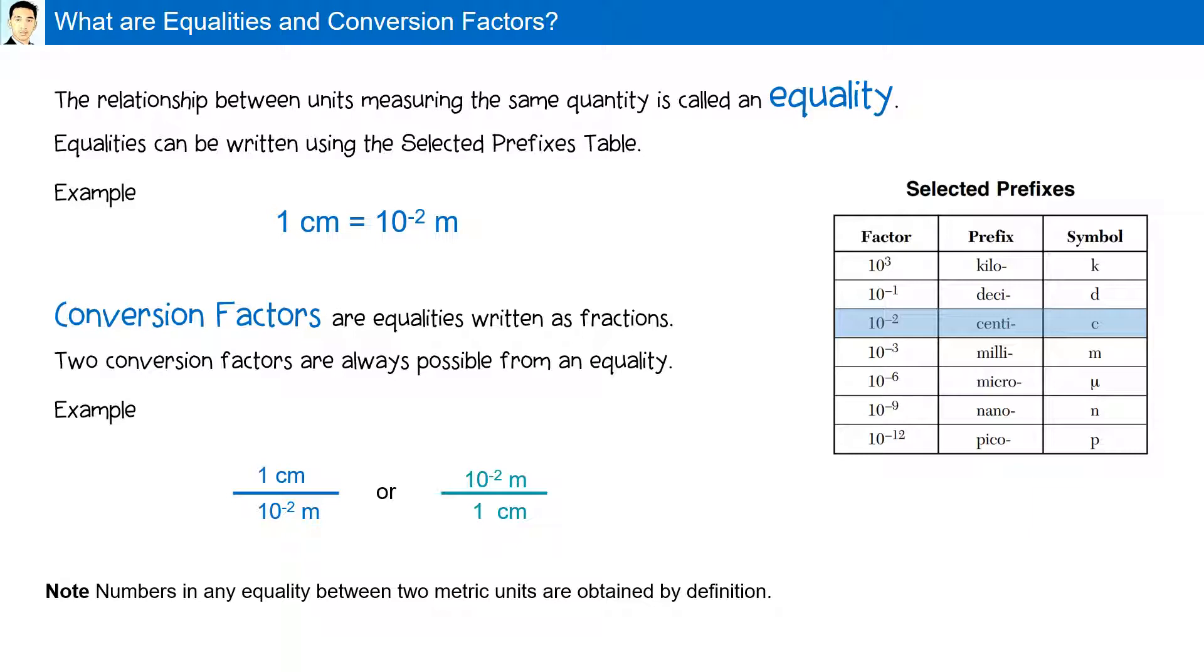Numbers in any equality between two metric units are obtained by definition. Because numbers in a definition are exact, they are not used to determine the number of significant figures.